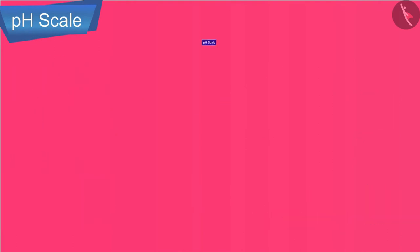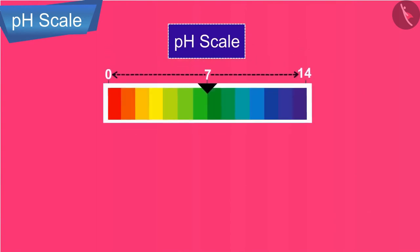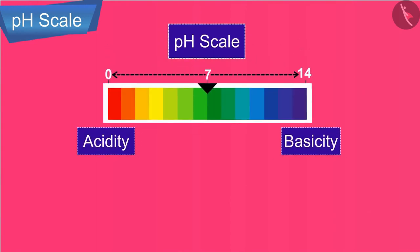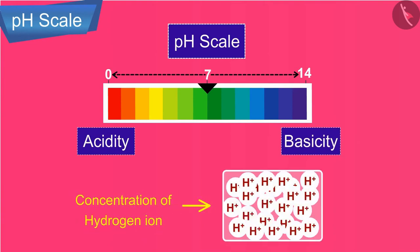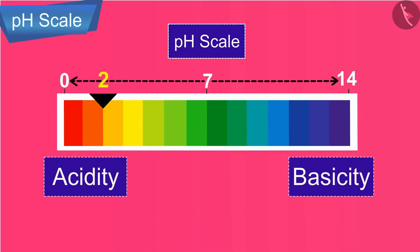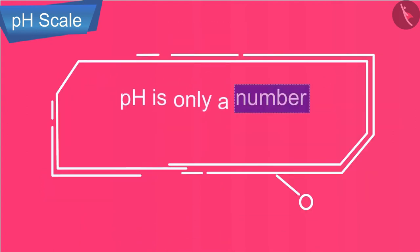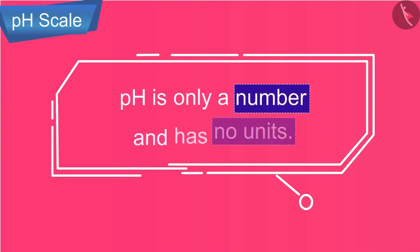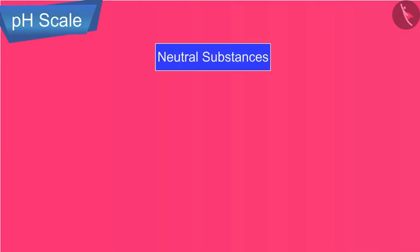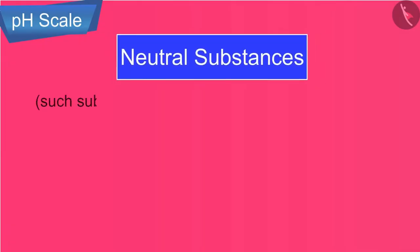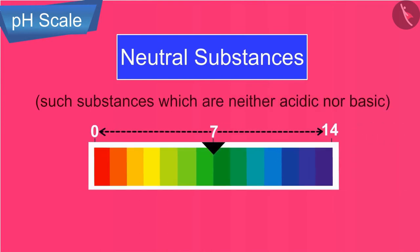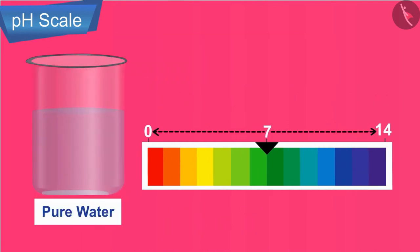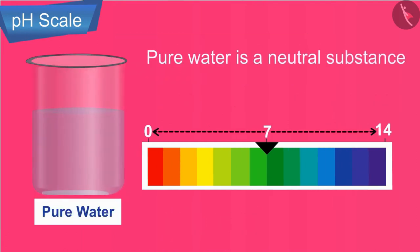In simple language, pH is a number that represents the acidity or basicity of a solution. The higher the concentration of hydrogen ions, the lower the pH. It is important to note that pH is only a number and has no units. Neutral substances — those which are neither acidic nor basic — have a pH of exactly 7. For example, pure water is a neutral substance and therefore has a pH value of 7.